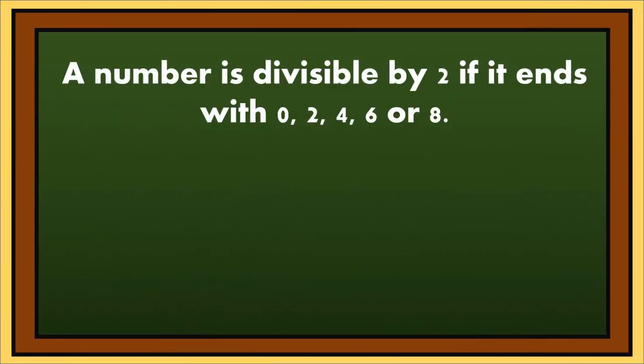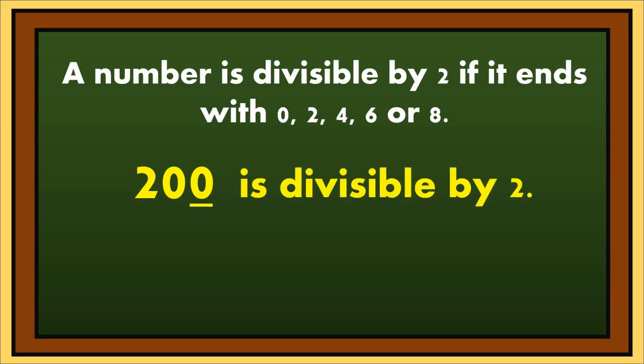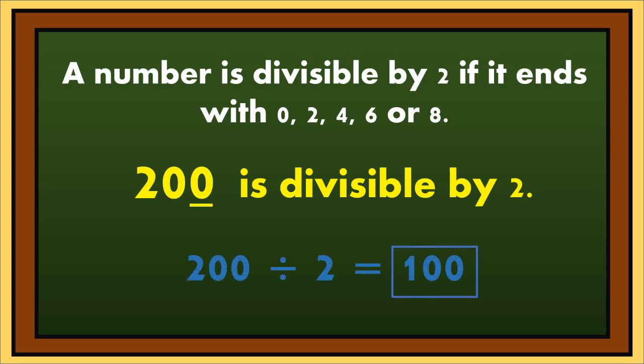Example: 200 ends with 0. According to the rule, if a number ends with 0, the number is divisible by 2. If we divide 200 by 2, the answer is 100.